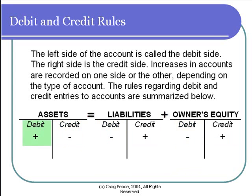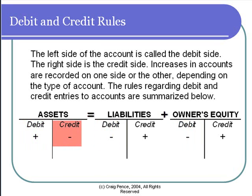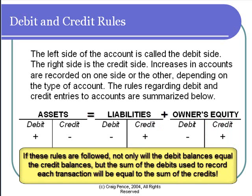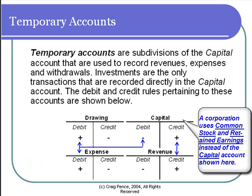Therefore, if I debit an asset account, I'm increasing it. But if I debit a liability or the capital account, I'm decreasing it. Likewise, if I credit an asset account, I'm decreasing it. But if I credit a liability or the capital account, I'm increasing it. I know this is confusing and difficult to get used to, but you do need to practice with these debit and credit rules until you know them very well. They're fundamental to everything else we do in the remainder of this course.